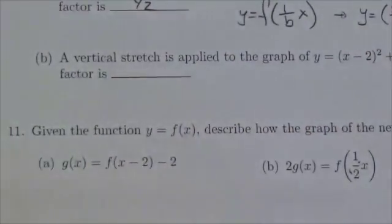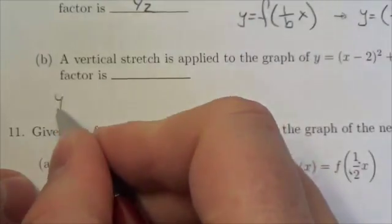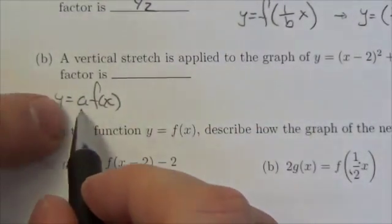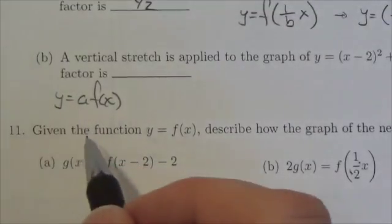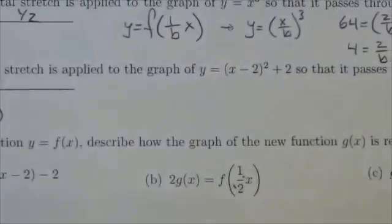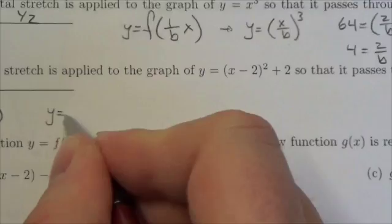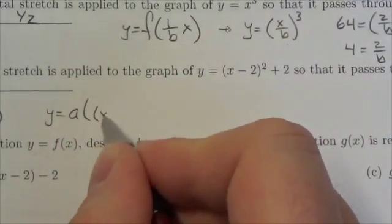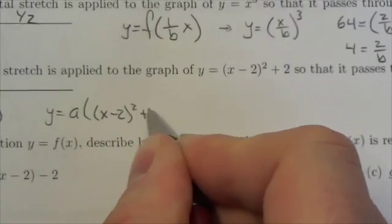A vertical stretch factor looks like this: let's apply it to the general function y = a·f(x). Whatever my stretch factor is, that's the a value. In this particular case, that would look like y = a times the entire function. It gets multiplied by the entire function.